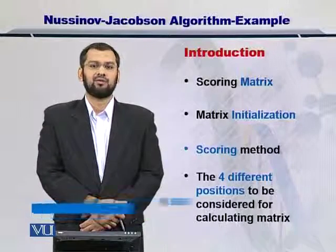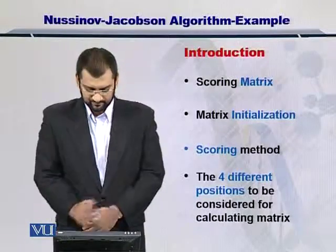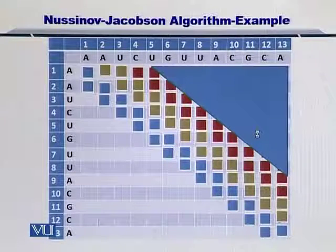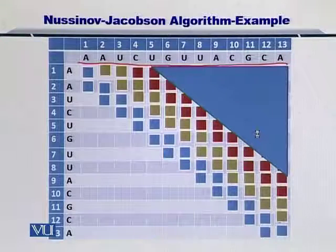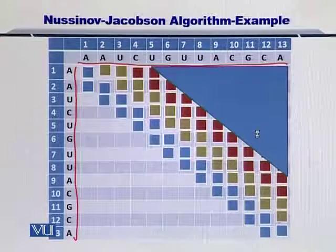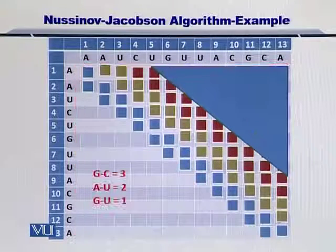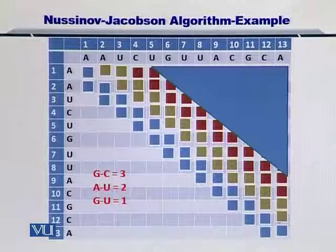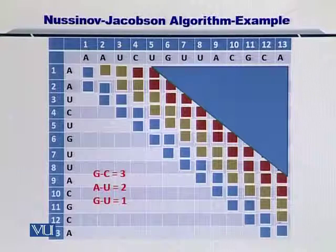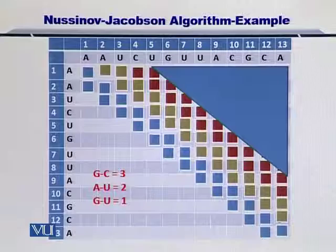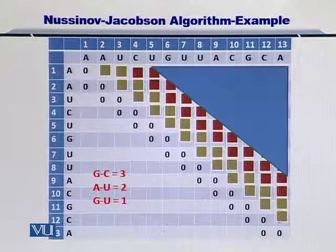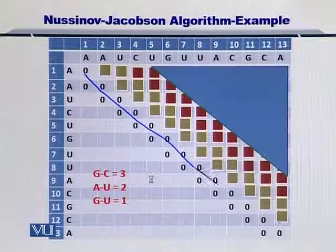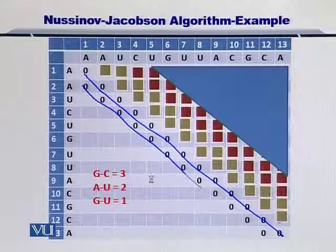So let's take a look at how the scoring scheme actually works and how you fill up the matrix. By looking at this matrix, you can observe that the RNA sequence has been placed on top as well as on the left side of the scoring matrix. The coupling energy between G and C is assumed to be 3, between A and U is assumed to be 2, and between G and U to be 1. We abstract the energy given out as a result of coupling of these nucleotides by 3, 2, and 1. Next, we initialize the diagonal of the matrix as well as the lower diagonal.